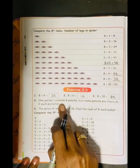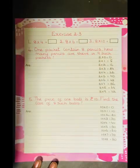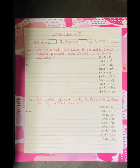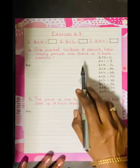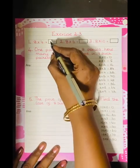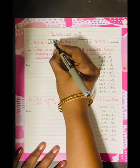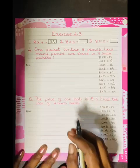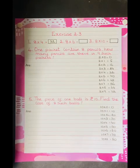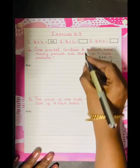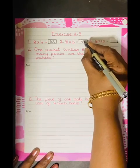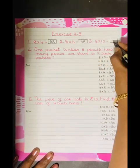Let's see the statement problem. Fourth one. One packet contains 8 pencils. So, before that, we will fill this. What is 8 times 4? 32. Then, 8 times 6 is 48. Then, 8 times 10 is 80. Okay.